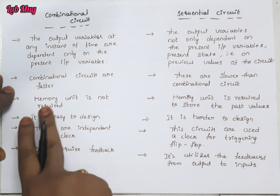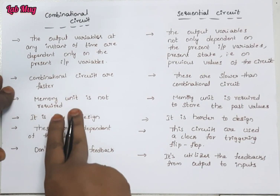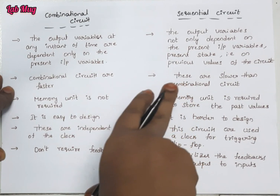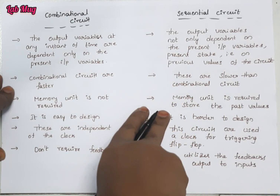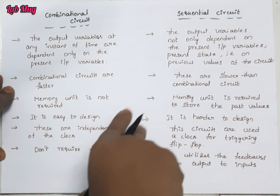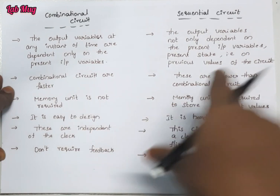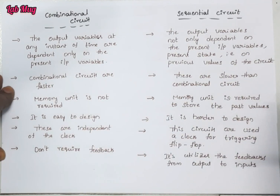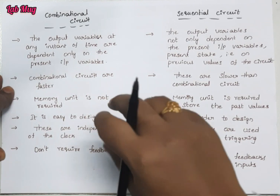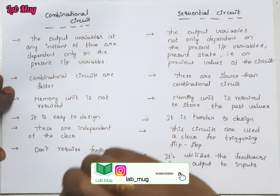The memory unit is not required in combinational circuits because we don't store previous values, so a memory unit is not needed. But in sequential circuits, a memory unit is needed because when it comes to sequential circuits, previous values must be present along with the present values. We access both values, so a memory unit is required here, only to store past values.